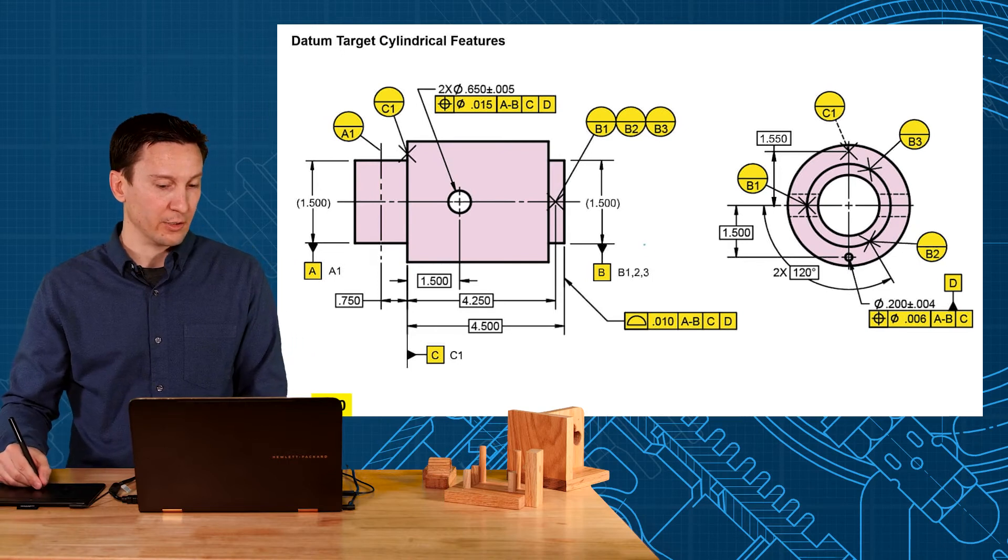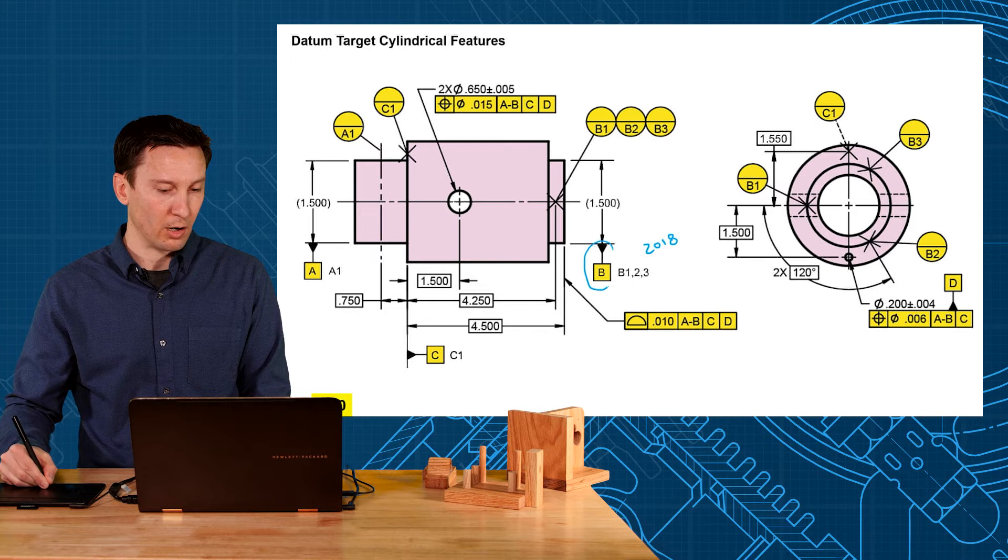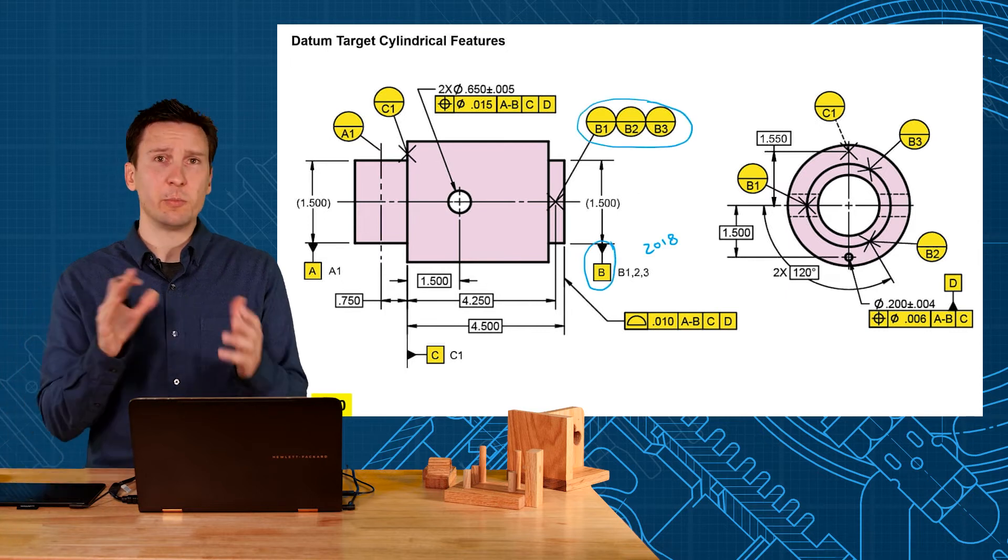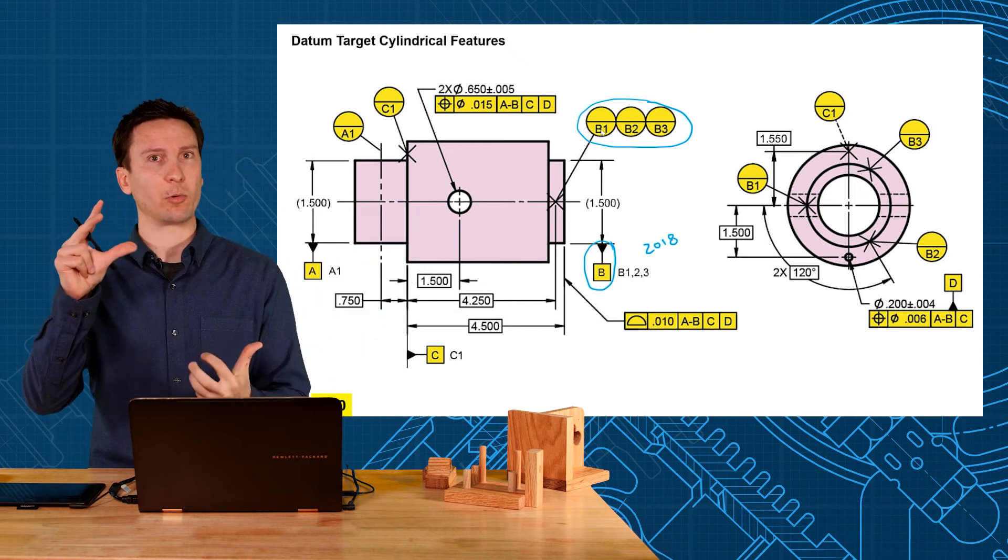Now as a new option in 2018, you can use a combination of the datum feature symbol and datum targets. This used to be a conflict - what do you want to be the datum feature, the entire surface or only three points? So in 2018, they said you can use both.